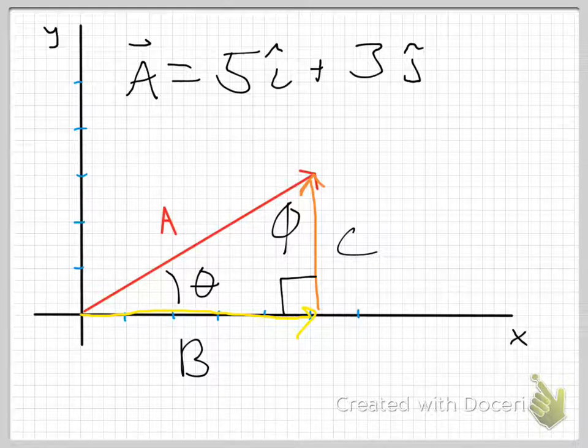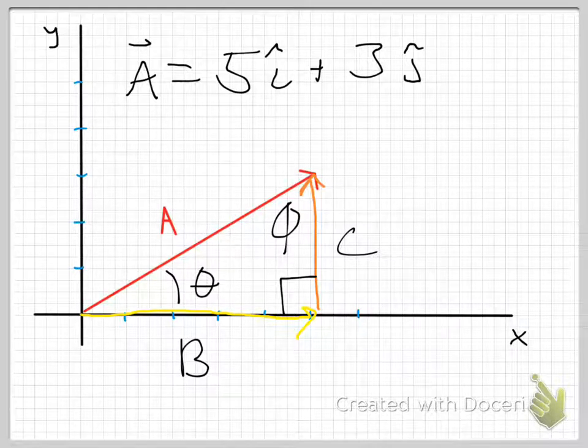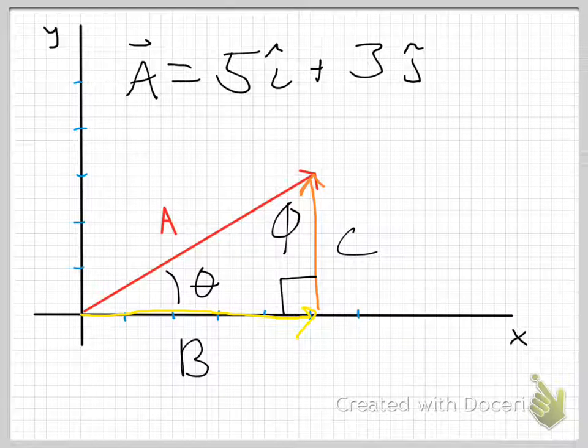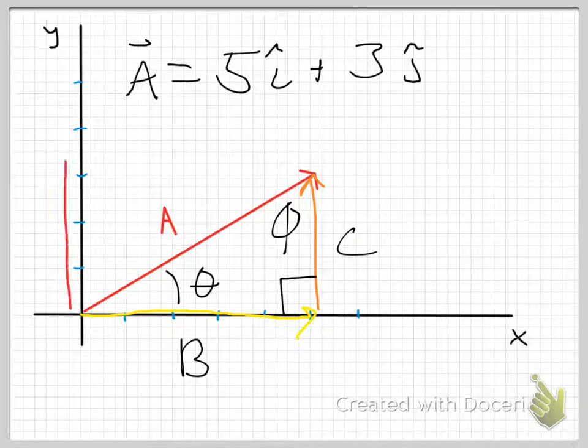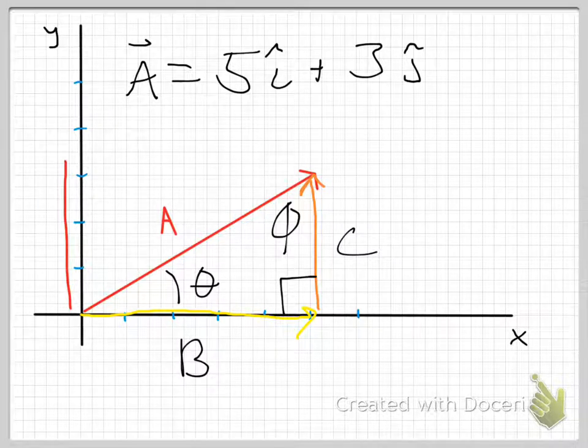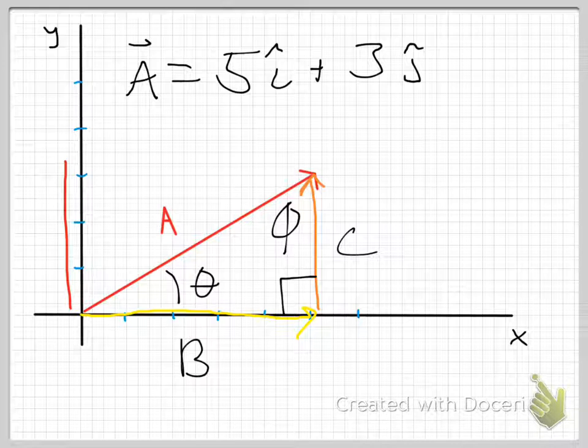I should point out that one of the strengths of vectors is that you can, as long as you don't change their length or their orientation, place them wherever you want to on a coordinate system. So I say parallel to the y-axis, I could just as easily have drawn C over here, actually on the y-axis, but it's easier to see where we're going with it if I make the triangles, which is why I've put C where I have.